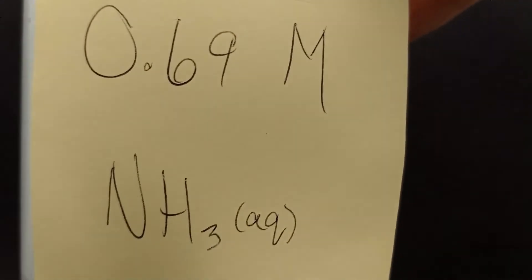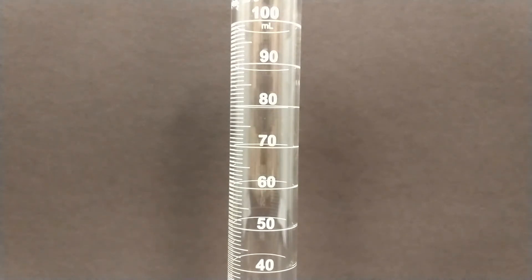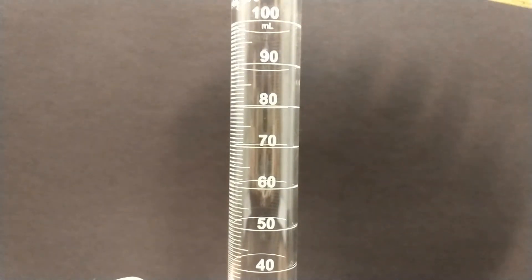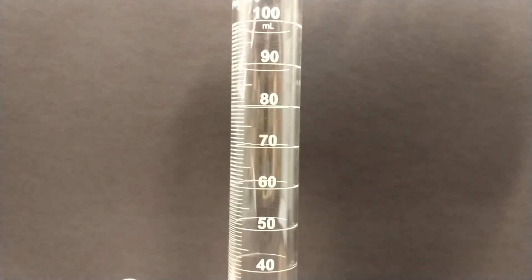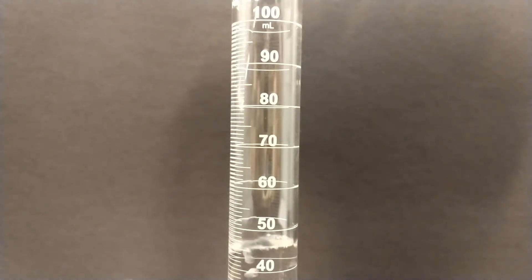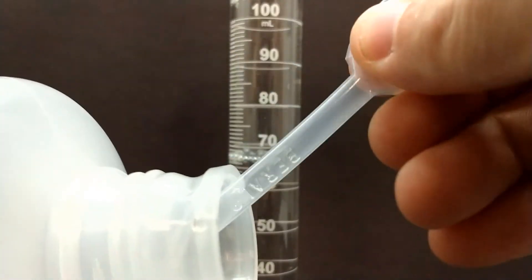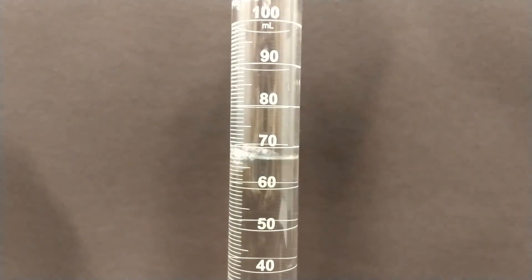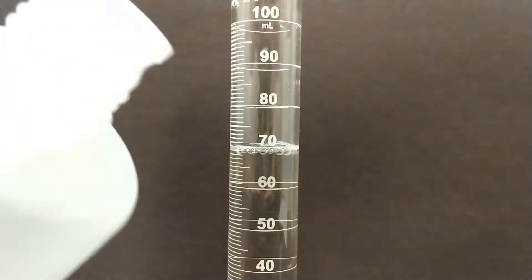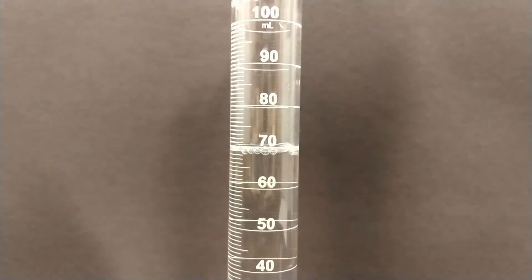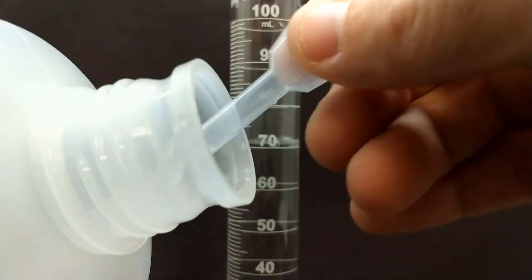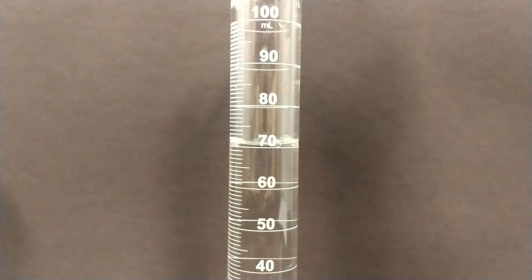The first step is to measure out 72.9 milliliters of the 0.69 molar ammonia aqueous. You want to use a clean and dry graduated cylinder and then pour it from your stock bottle into the graduated cylinder. Once you get close to your final volume, your desired volume, then you're going to want to switch over to a pipette so that you can add precisely to the volume that you need.